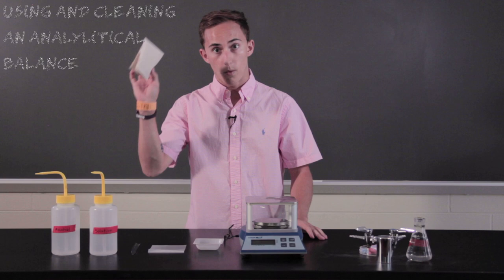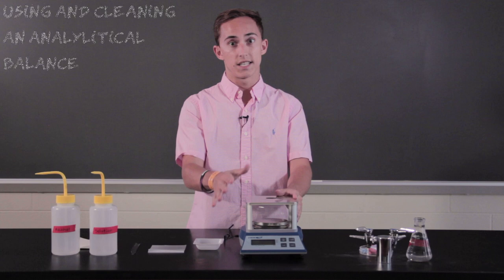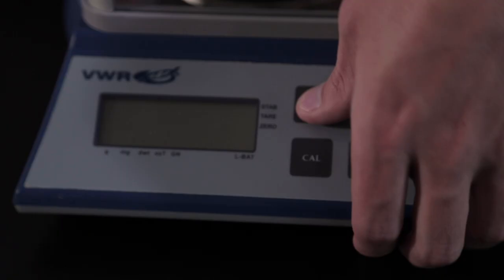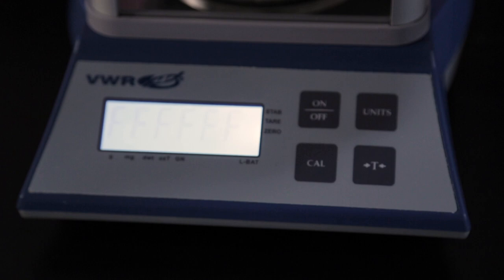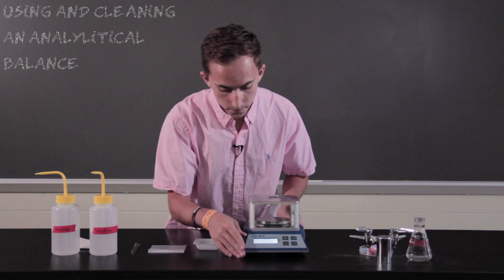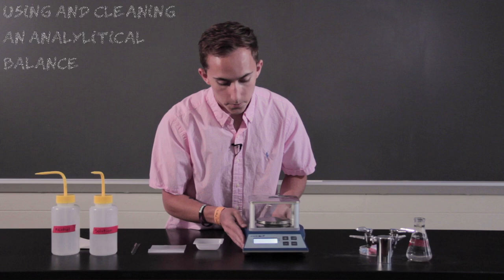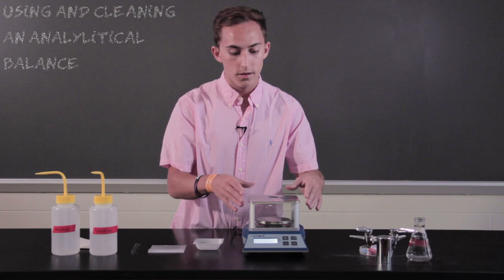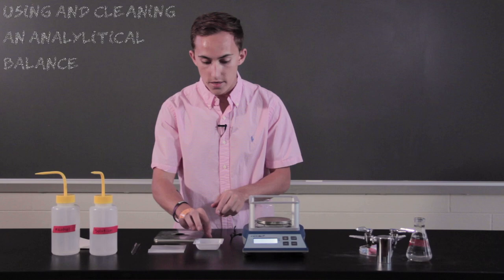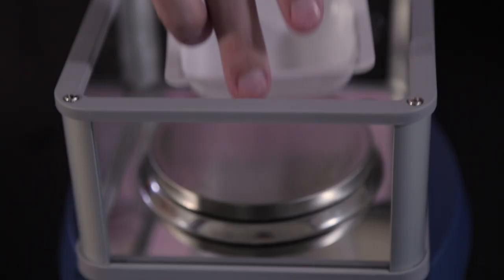First thing we're going to learn is how to balance a sample on an analytical balance. You're first going to turn it on, you're going to let it do its thing for just a second. It's just counting down. Perfect. Then, you're going to take the top off and set it aside, and then you're going to put your weigh boat on top of it.